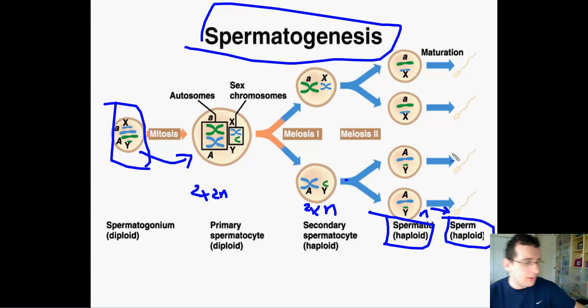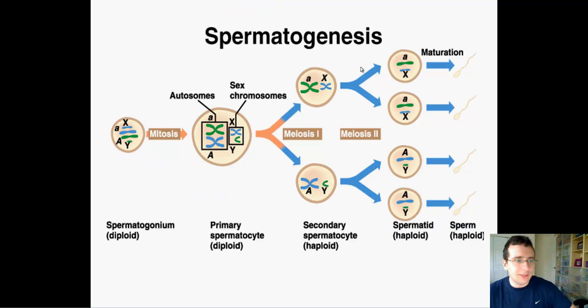So the primary spermatocyte is that two times 2N cell, which is diploid, and then the secondary spermatocyte is produced at the end of meiosis I, and it's already haploid. It's a two times N cell, and then you have the spermatid, which is already the N cell after meiosis II and the separation of chromatids. But remember that this screen is not showing you the crossing over which happens during the prophase of meiosis I.